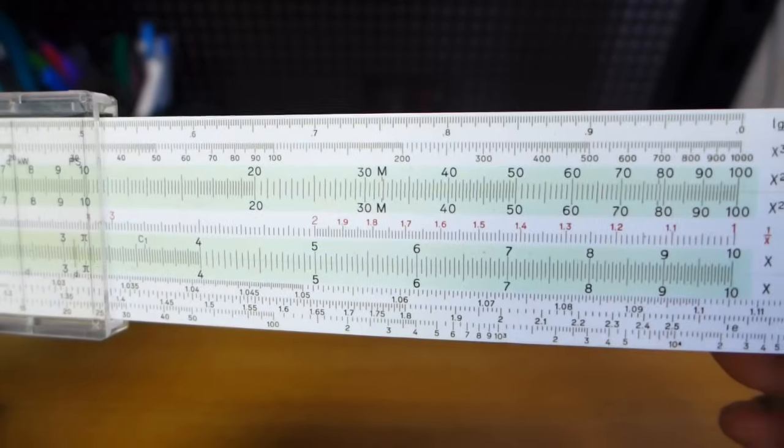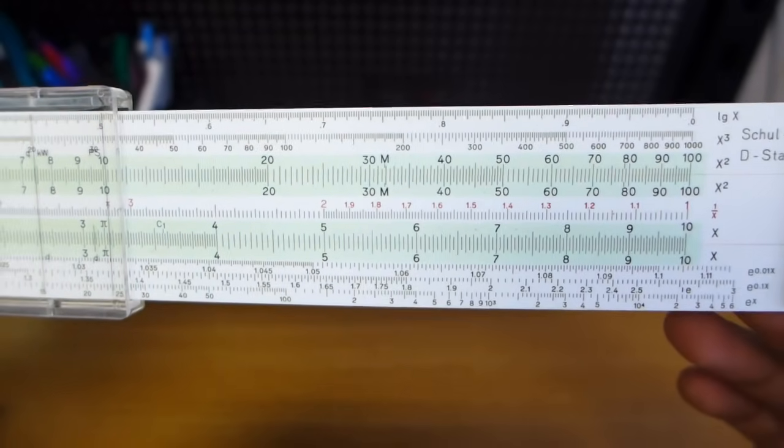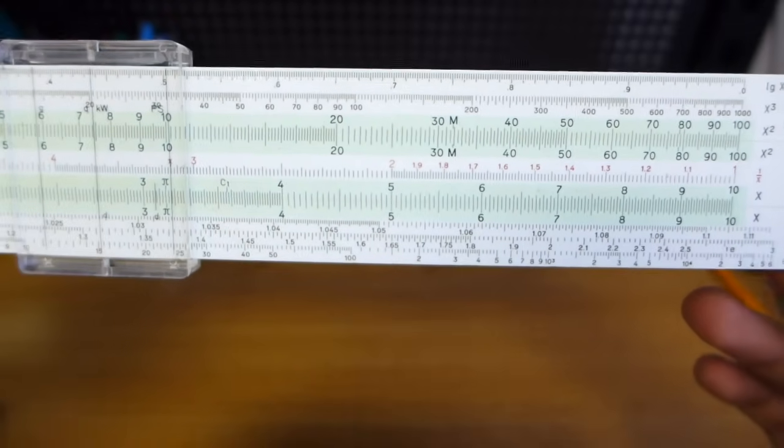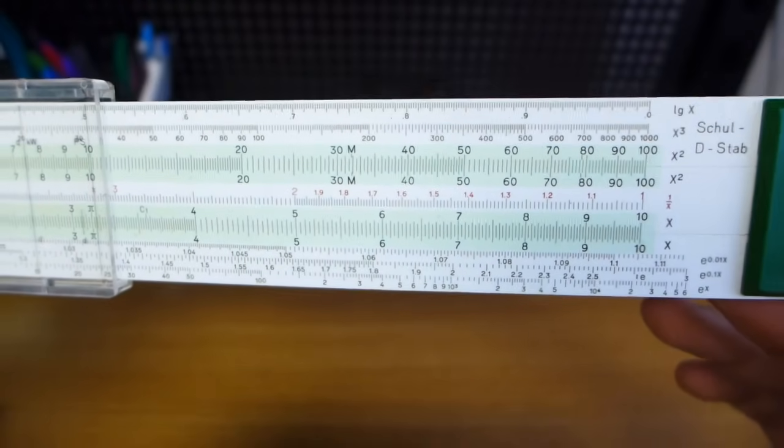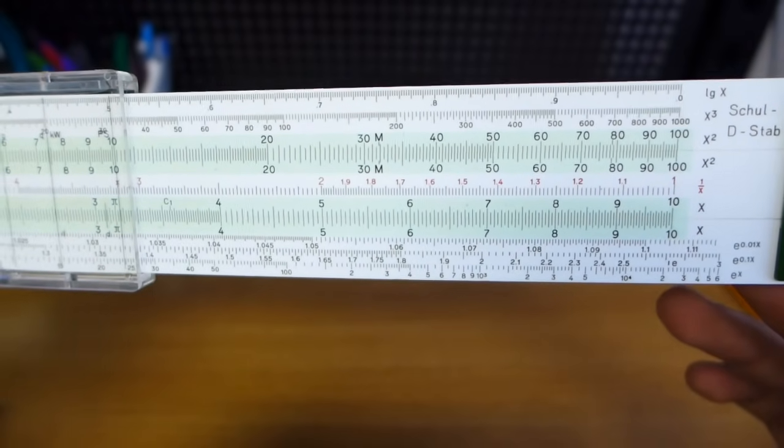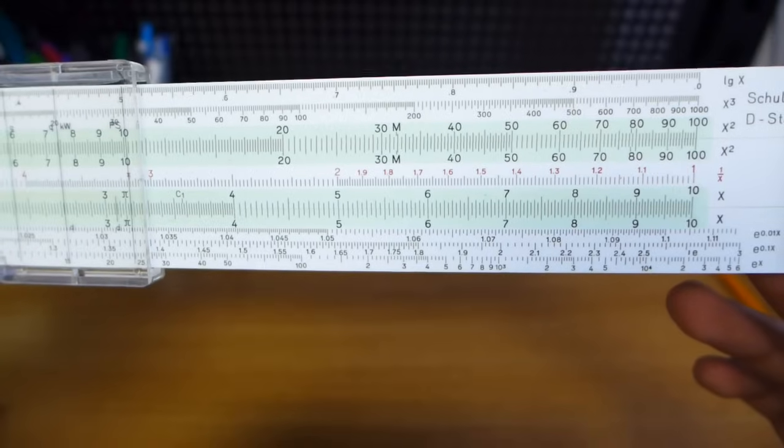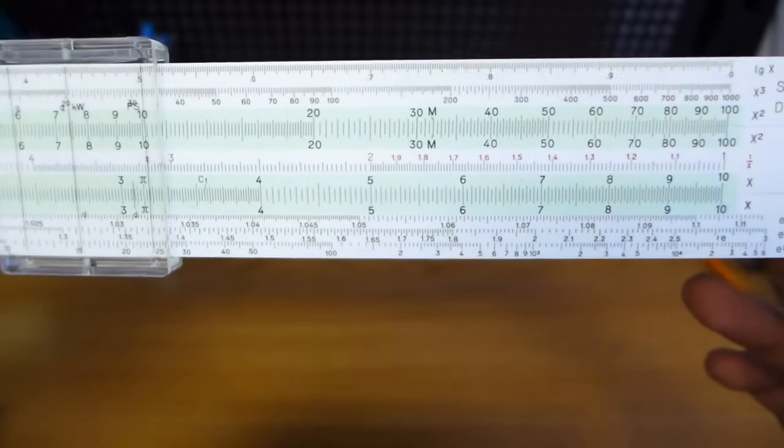Slide rules are capable of doing multiplication and division, squaring and cubing, as well as square roots and cube roots at their most basic level. But some slide rules, in fact most, can also do trigonometrics and natural logs, regular logs and stuff like this.